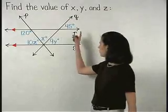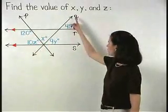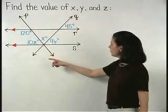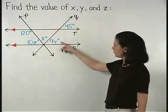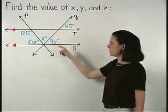Notice that lines r and s are parallel, and using the transversal q, we can see that the angle marked as 9y and the angle marked as 45 are corresponding angles.